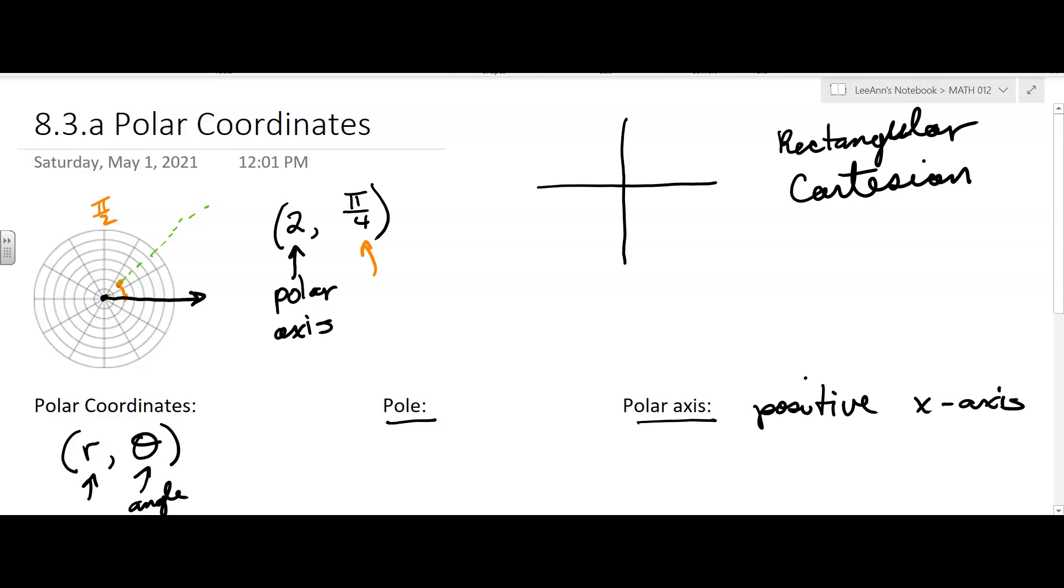Now you don't draw that line, so I don't want to be confusing. Oh, there goes my polar axis. But that's the point right there. So that's what we're doing with polar coordinates. We'll do a few more examples.